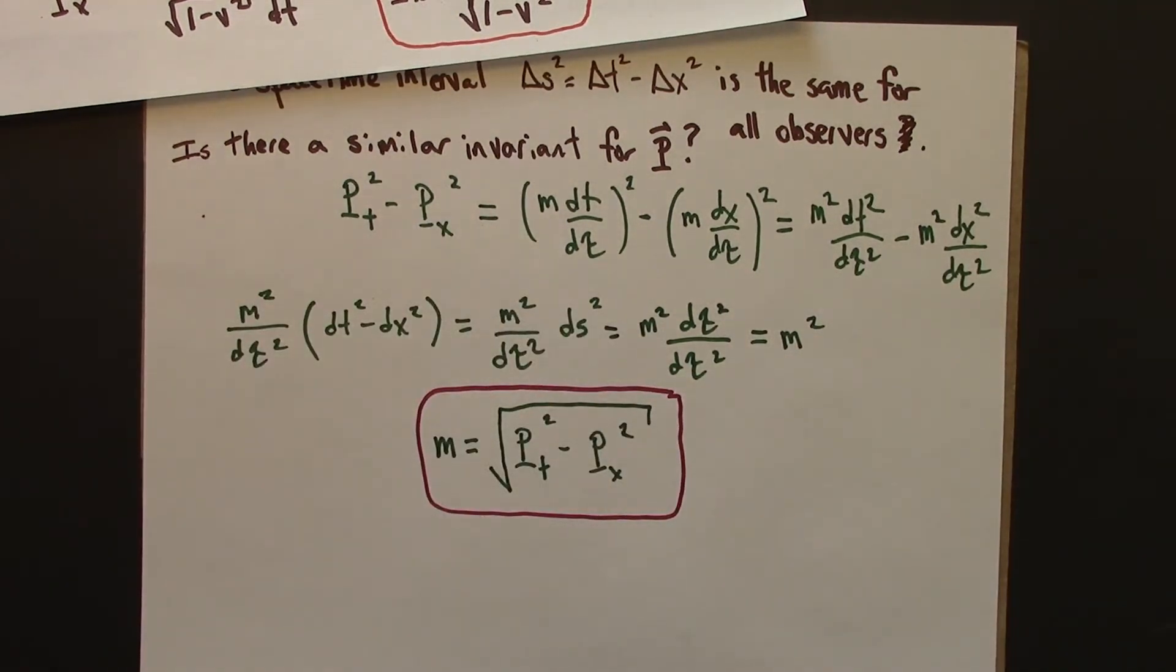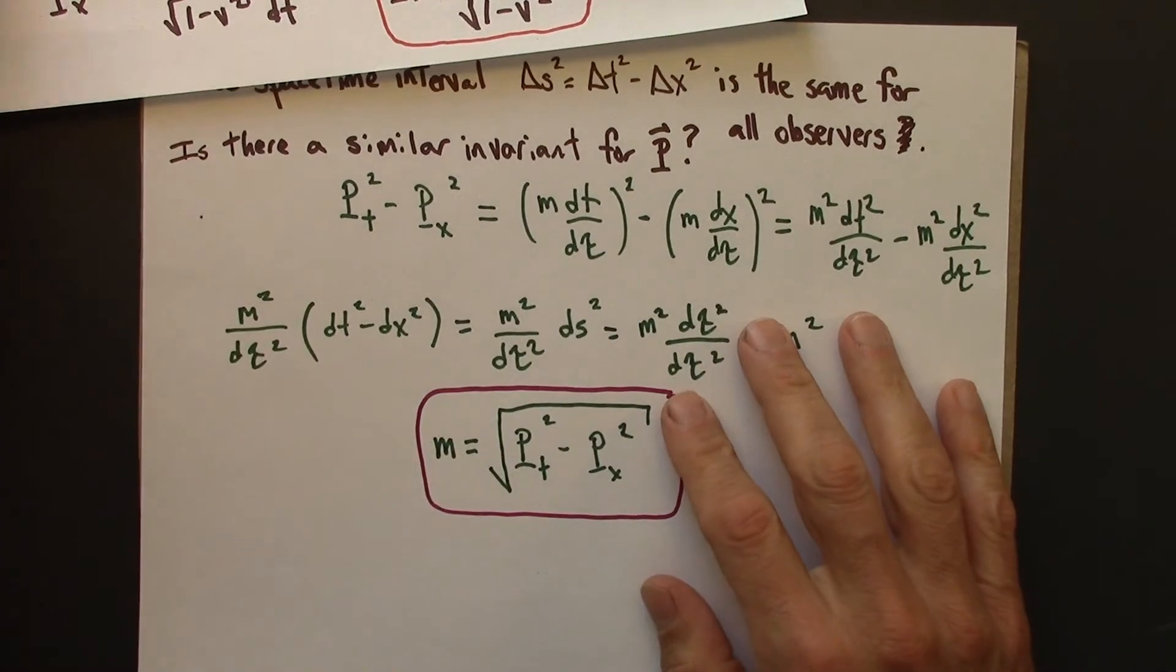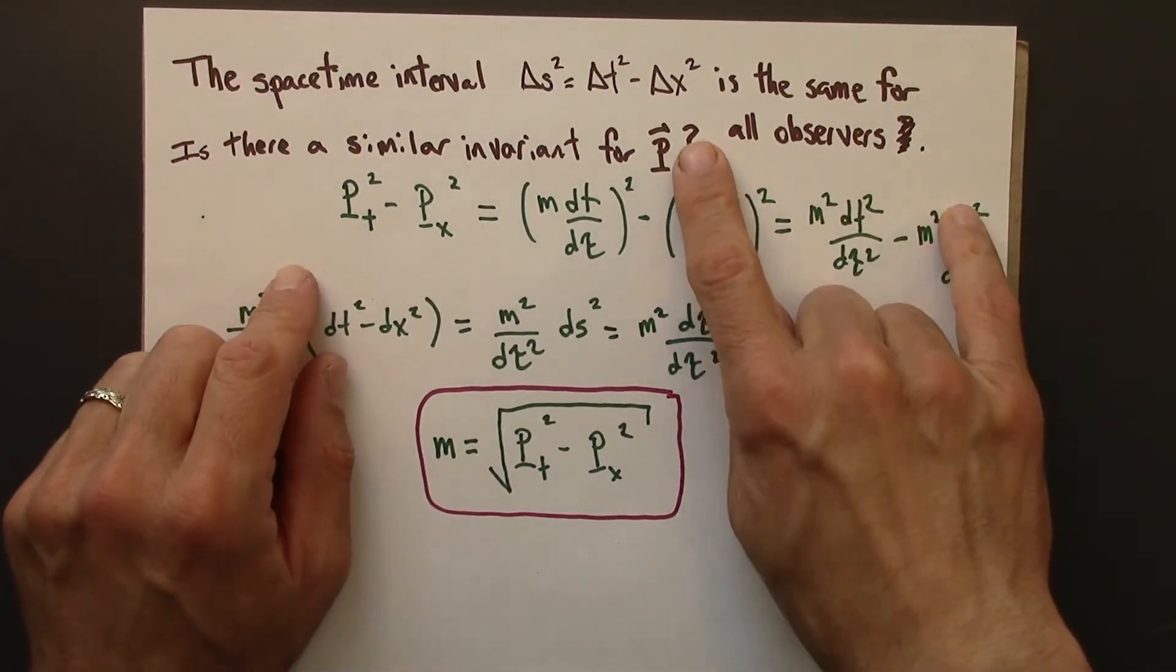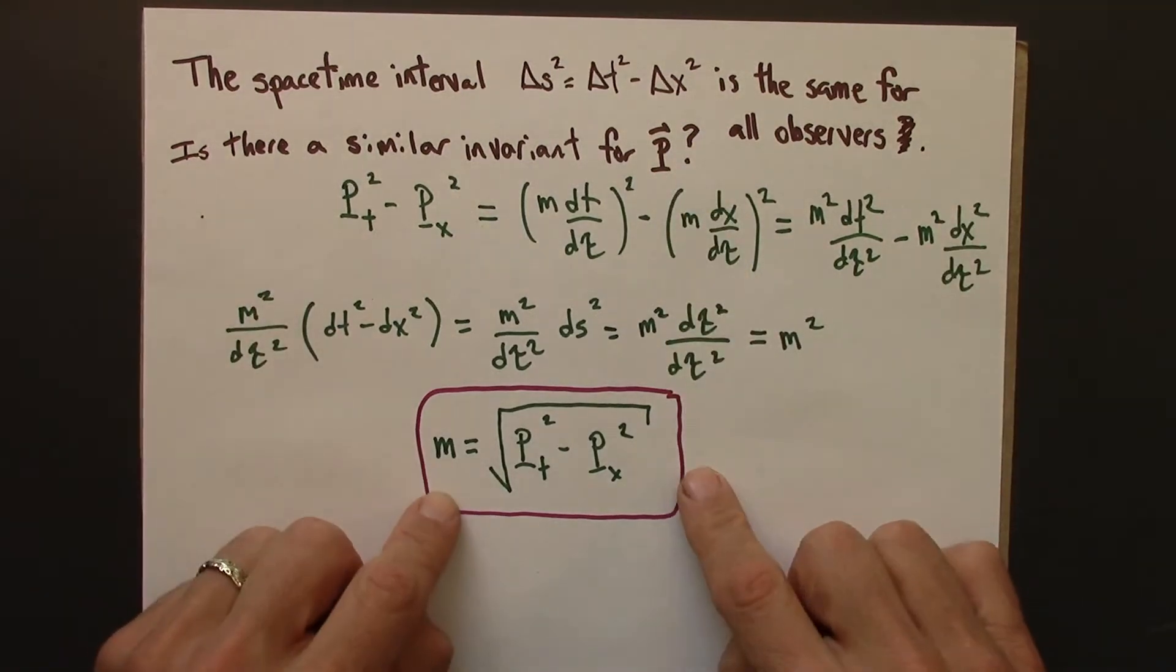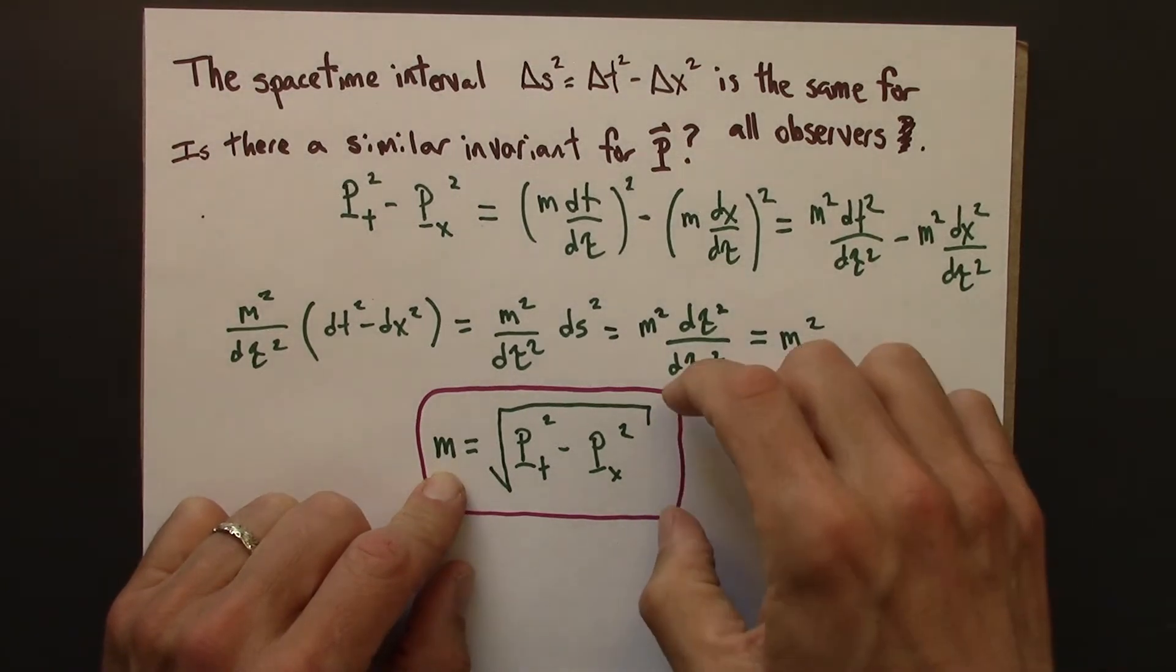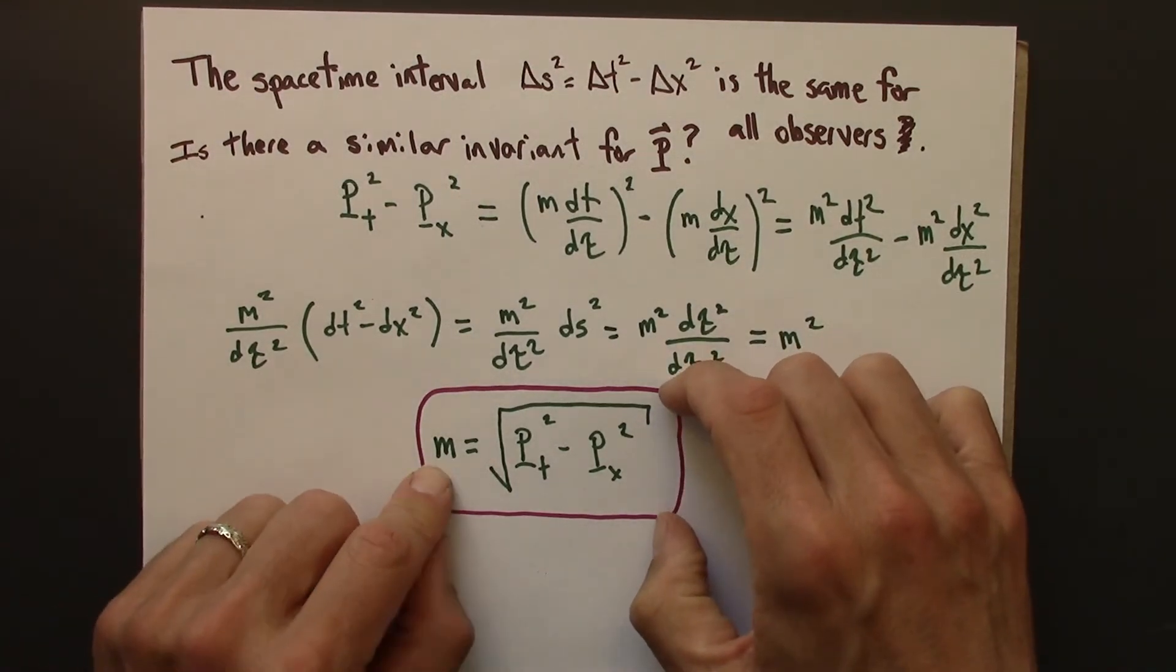So there is indeed an invariant for the momentum, something that all observers will agree on. And that's the mass. The mass of an object is invariant. All observers will see the same thing for it.